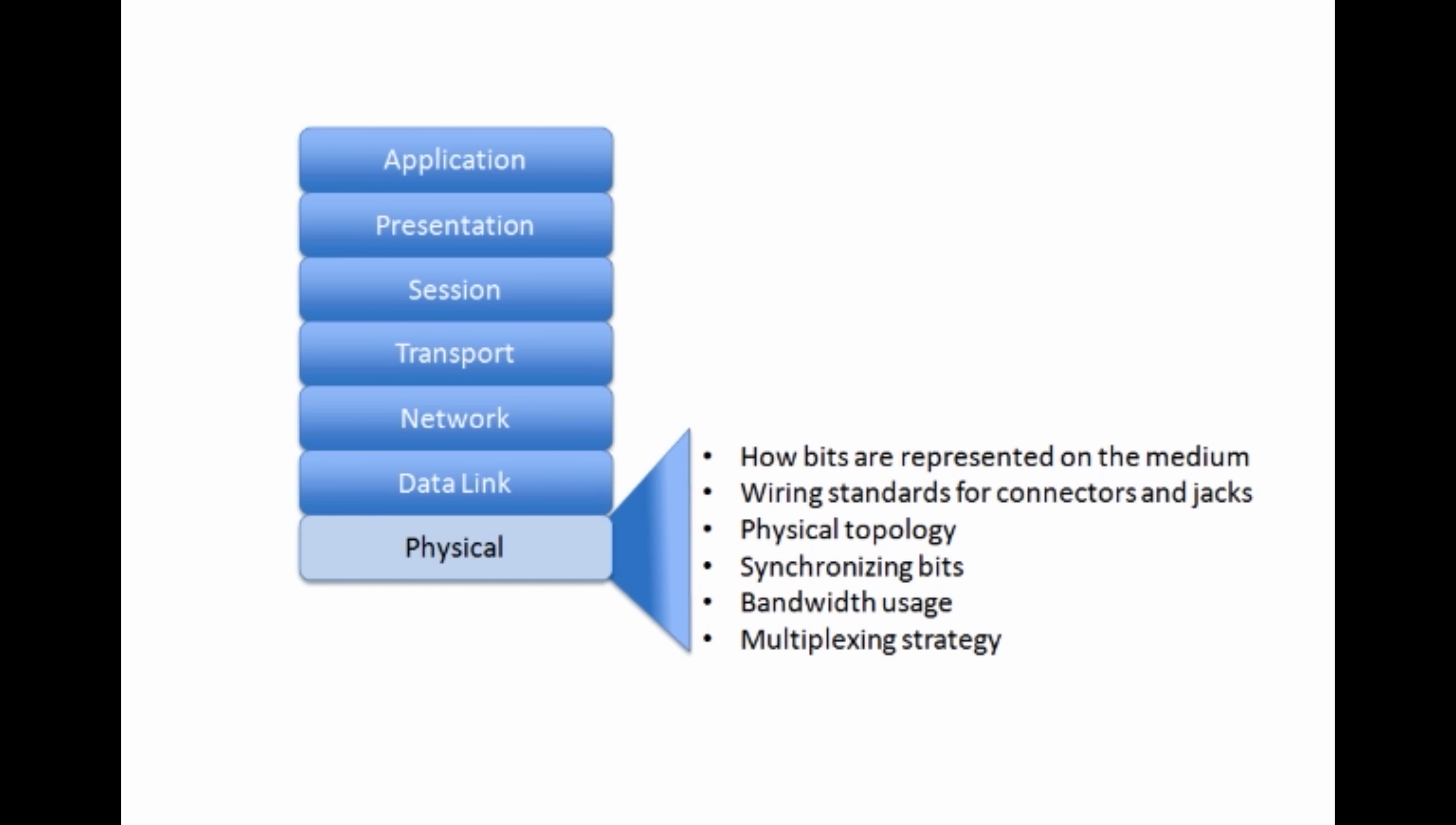Notice that the physical layer specifies how bits, how ones and zeros are represented on the medium. Let's ask ourselves, how do we represent a binary one or zero? If it's a copper wire, we might represent a binary one with the presence of voltage, a certain voltage level. A binary zero could be represented by the absence of voltage. If we're representing binary bits over a fiber optic cable, it might be the presence or the absence of photons, the presence or the absence of light.